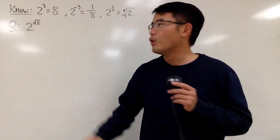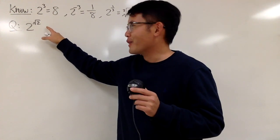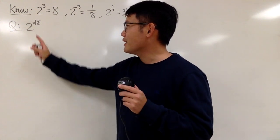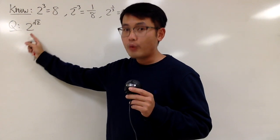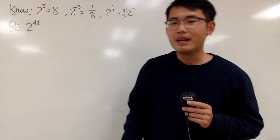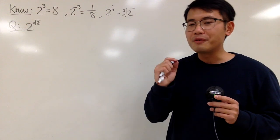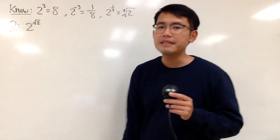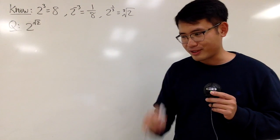But have you ever wondered what is going on if the exponent is irrational? So let's take a look at what's 2 raised to the square root of 2 power — yes, an irrational number for the exponent. We have proved that square root of 2 is irrational.